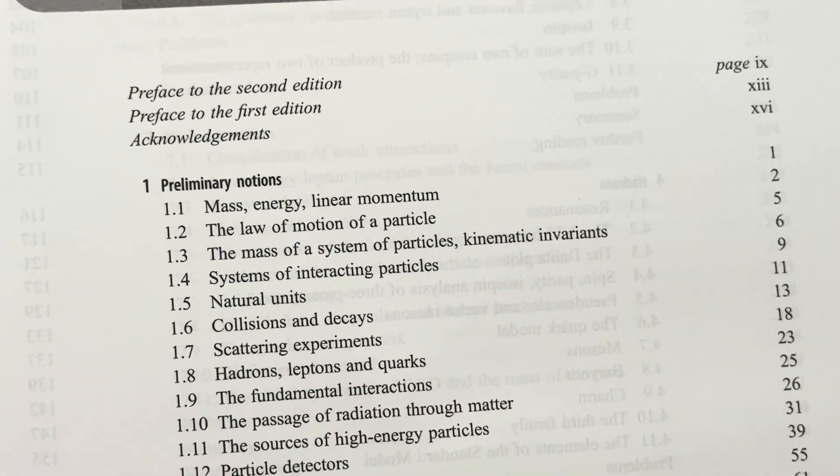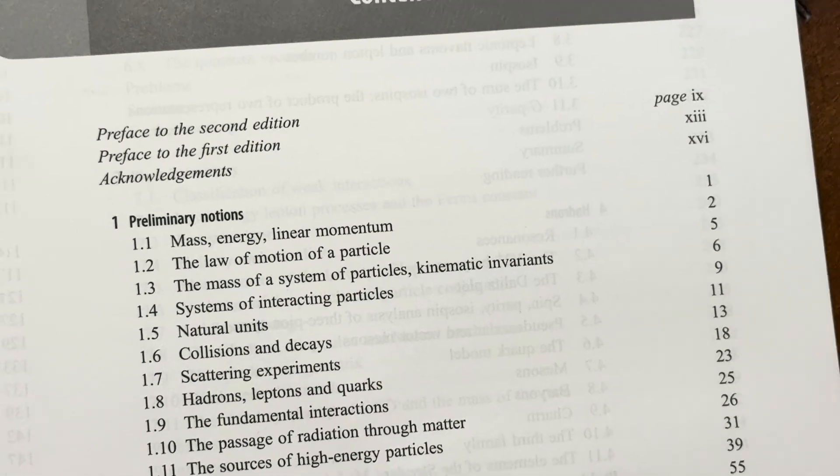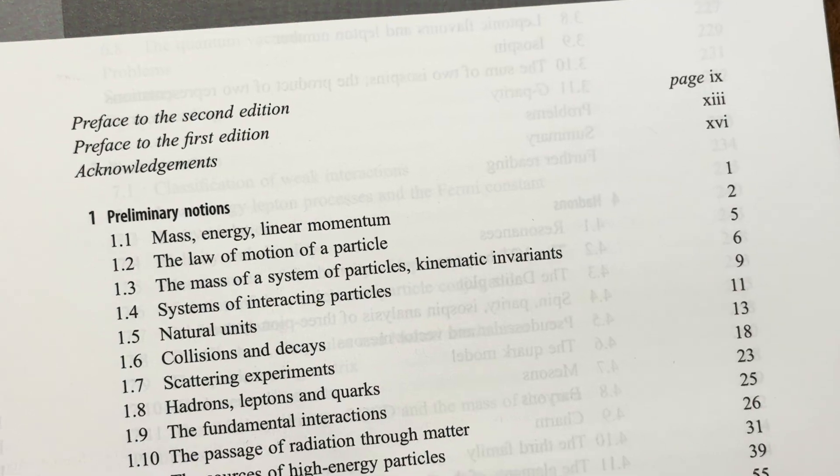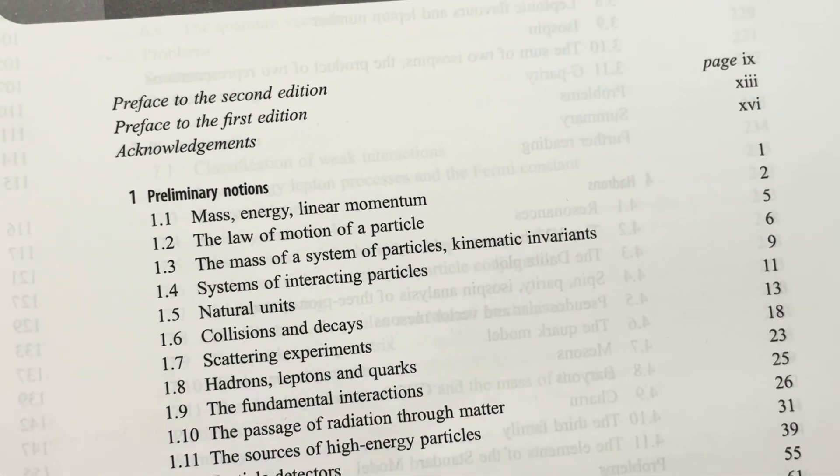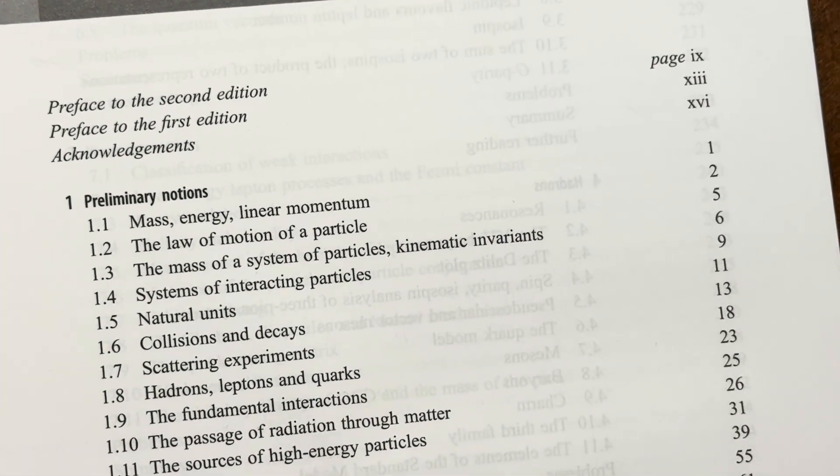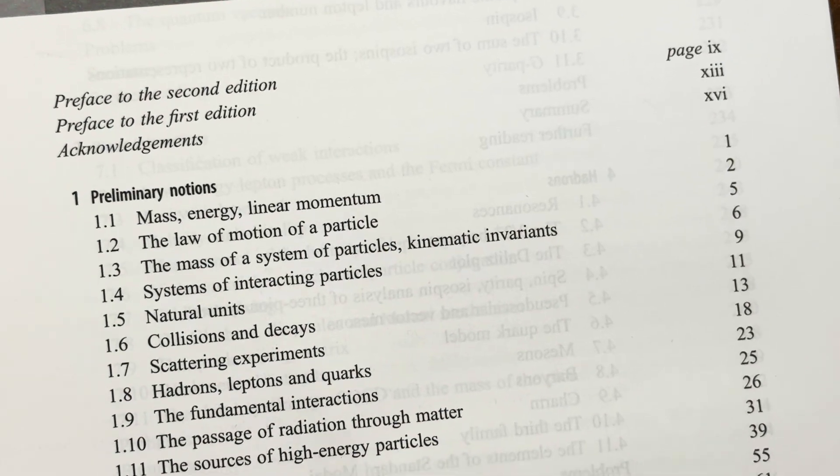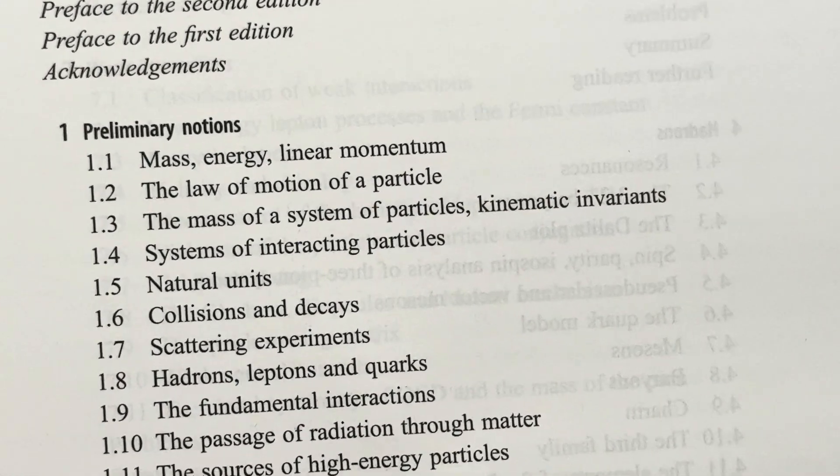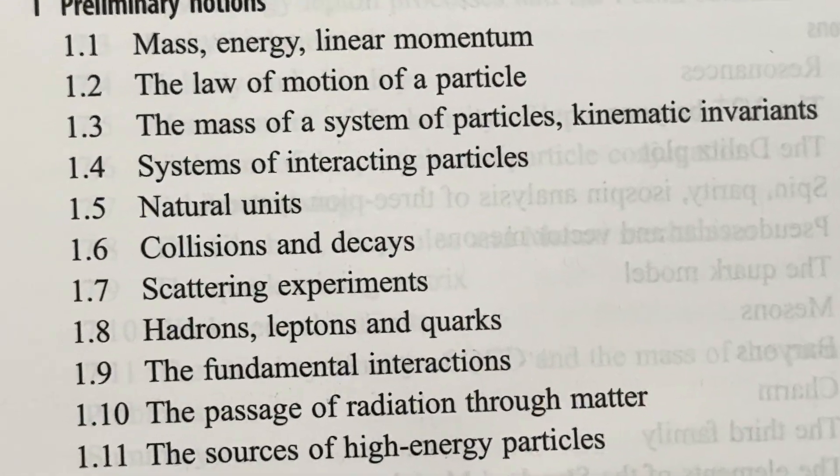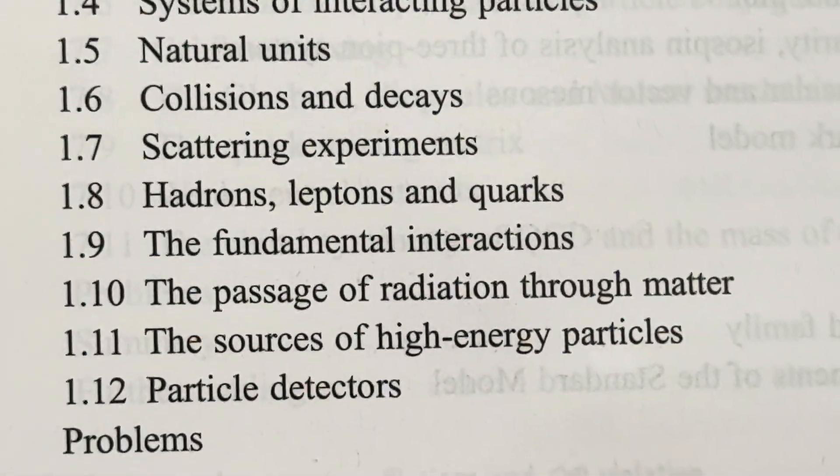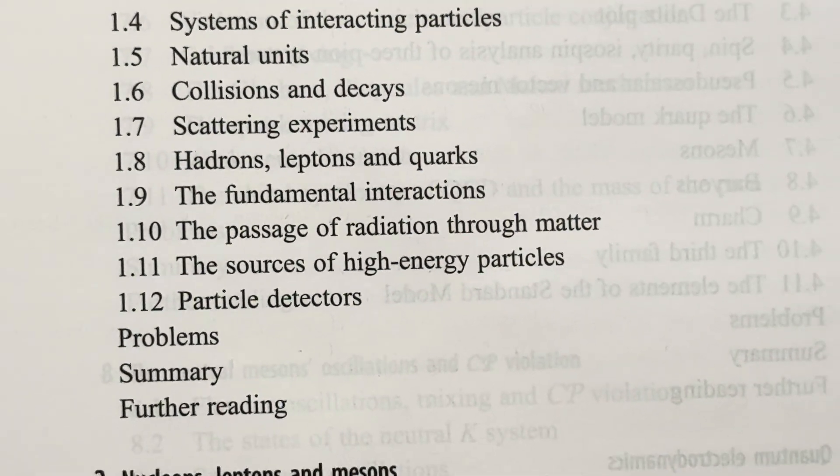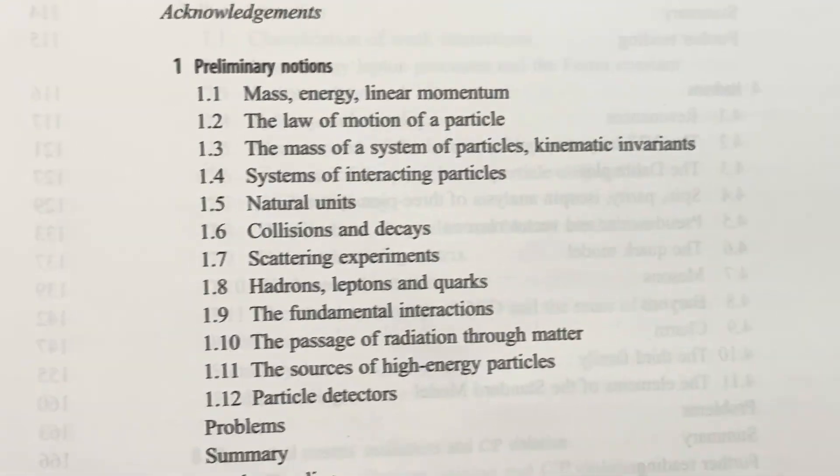Here are the contents of this book. Preliminary Notions: mass, energy, linear momentum, the law of motion of a particle, the mass of a system of particles, kinematic invariance, systems of interacting particles, natural units, collisions and decays, scattering experiments, hadrons, leptons and quarks. These are just the preliminary notions.